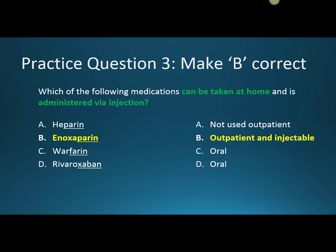The next question is focusing on our low molecular weight heparin, enoxaparin. Which of the following medications can be taken at home and is administered via injection? That's going to be our enoxaparin or our low molecular weight heparin. Heparin itself is not used outpatient — it's only used in the inpatient setting while it is still an injection. Enoxaparin is an injection that's administered subcutaneously and it can be used outpatient. Warfarin and rivaroxaban, while they're both used outpatient, they are only oral formulations.